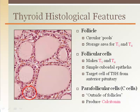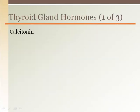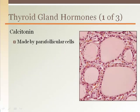The cells in the areas outside of and adjacent to the follicles are called parafollicular cells. Parafollicular cells are also known as C cells because they produce the calcium hormone calcitonin. Calcitonin is a hormone produced by the thyroid gland, produced by the parafollicular cells located outside of the pink follicles.